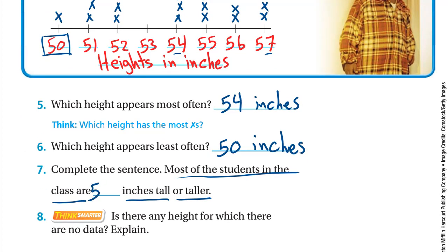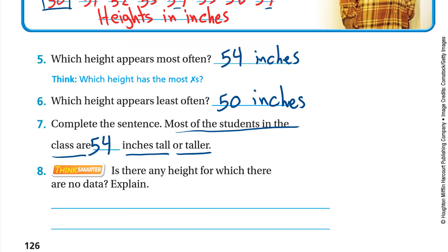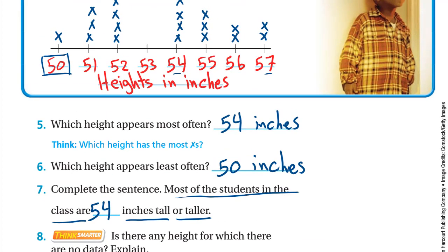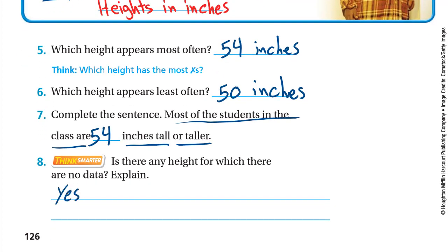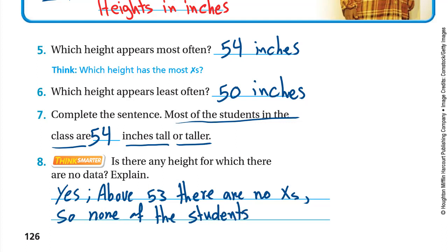Number eight: Is there any height for which there are no data? Explain. Yes, for 53, for example, we don't have any X's. So we can say yes, above 53 there are no X's. None of the students are 53 inches.